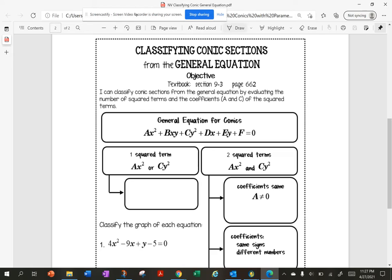Here is my general equation, and the two terms I'm only concerned with are the squared terms. So if I have one squared term, I either have x squared or y squared, then I have a parabola.